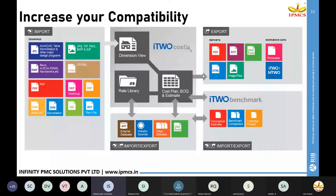Costex supports 2D files like AutoCAD, PDF and JPEG files for quantity takeoff. For IFC or BIM models, it supports models from Revit, ArchiCAD, Tekla, MicroStation, NavisWorks, etc. Once your quantity model or drawing is imported, we have a dimension view module for quantity takeoff, a rate library module for preparing project rates, and a workbook view for cost plans and estimates. Reports can be exported to PDF, RTF, image files, etc.